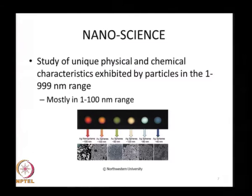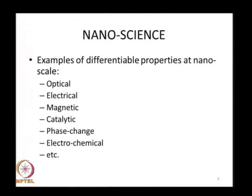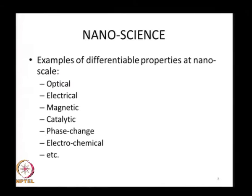You can see examples of nano materials such as silver, gold spheres and prisms, which display distinct size, shape, and color characteristics. Some of the unique, differentiable properties observable at nano scale — properties very different from those at micron scale — include optical, electrical, magnetic, catalytic, phase change, and electrochemical properties.